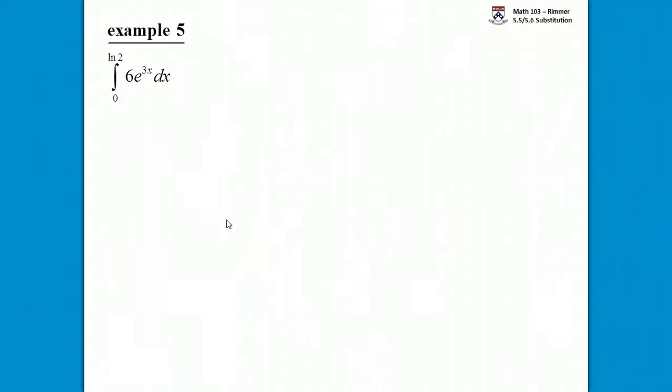So now we have an exponential example. We have e raised to the 3x, and that's multiplied by 6, and we're finding the definite integral from 0 to the natural log of 2.